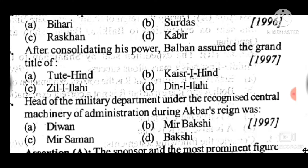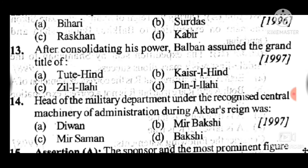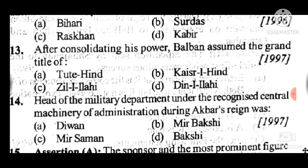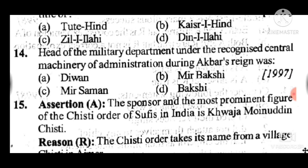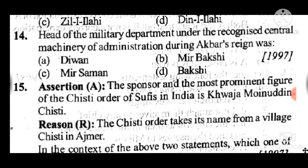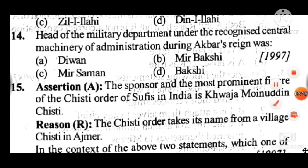Question 14: Head of the military department under the recognised central machinery of administration during Akbar's reign was — answer to question 14 is B: Mir Bakshi. Question 15: The founder and most prominent figure of the Chishti order of Sufis in India is Khwaja Moinuddin Chishti. The reason — the Chishti order takes its name from a village Chisht in Ajmer.